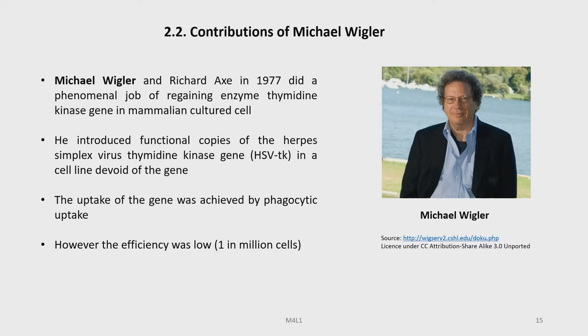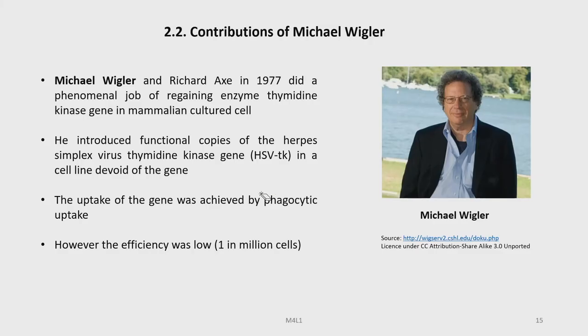Another person who contributed to the development of this field is Michael Weigler and Richard X, who in 1977 did a phenomenal job of regaining enzyme thymidine kinase activity in mammalian cultured cells. He introduced functional copies of the herpes simplex virus thymidine kinase gene, HSV-TK, into a cell line devoid of the gene, making an HSV-TK negative cell line HSV-TK positive. The uptake of the gene was achieved by phagocytic uptake, however the efficiency was low — one in a million cells.